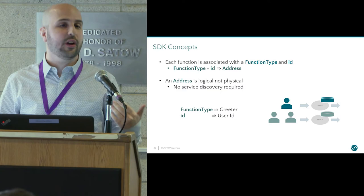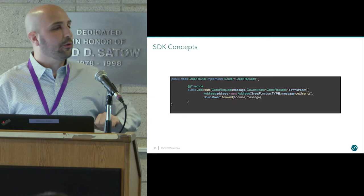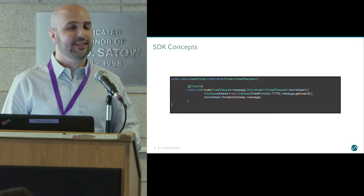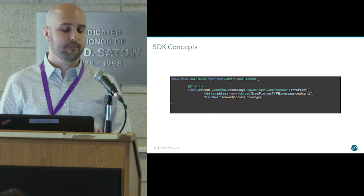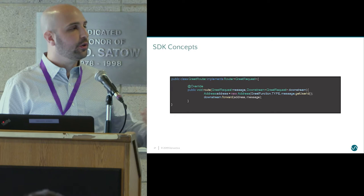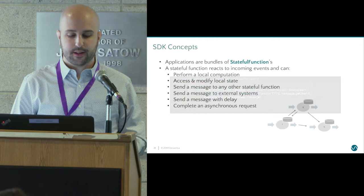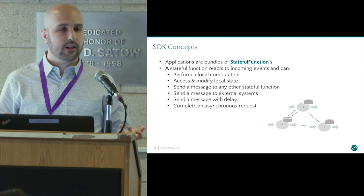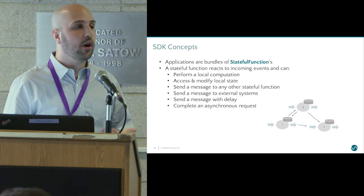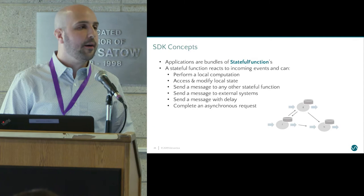Let's say we have a very simple hello world example. We want to greet users, but specifically we want to do it based on how many times they've been seen so far — so we might say 'hello,' then 'welcome back,' then 'third time's the charm,' things like that. That means we need to keep track of the number of times each user has been seen by the system, also known as state. So we might create a greeter function type and have one instance for every single user that interacts with our system. This is our router — attached to our ingress — and for each record it creates an address based on the greeter function type and the user ID, then forwards that message on.